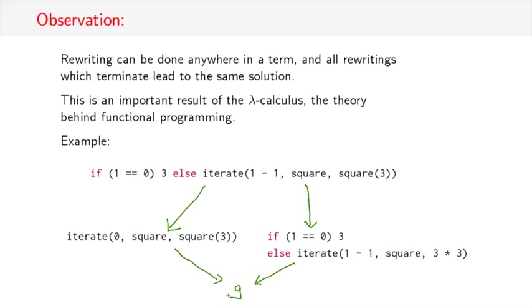And that idea that I can rewrite anywhere in a term, but finally all results yield the same result, sometimes called confluence, because these arrows, they flow together in the final result. And this confluence result has been discovered by Church and Rosser, so sometimes it's also called the Church-Rosser theorem of lambda calculus.